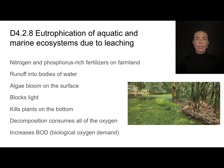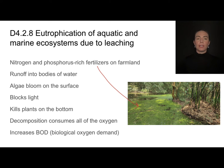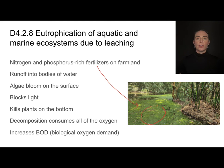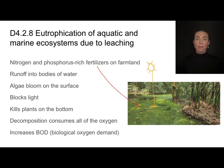Let's talk about eutrophication in a little more detail. Fertilizers used on farmland are typically very rich in nitrogen and phosphorus. When it rains, these nutrient-rich fertilizers run off into bodies of water. Normally algae populations are kept in check by the limited availability of nitrogen and phosphorus, but without that limiting factor, algae blooms — growing rapidly on the surface. This blocks light that would normally penetrate all depths of the water, causing plants at the bottom of the body of water to die.